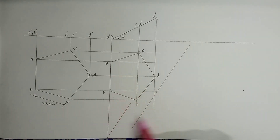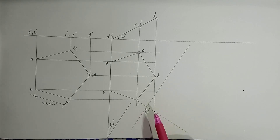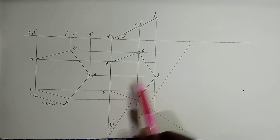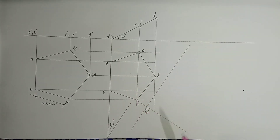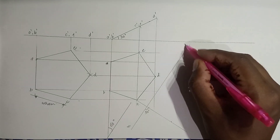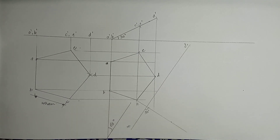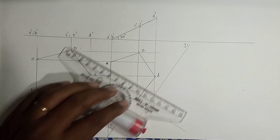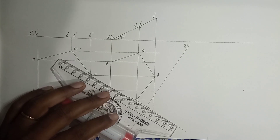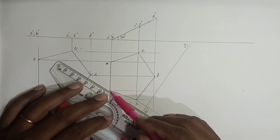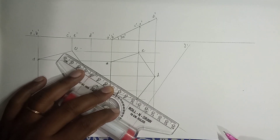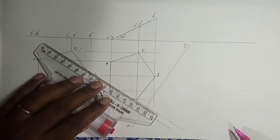Normally in the general three-step problem we make this line at 60 degrees and get the projection. Since this is the auxiliary method, I will have the X1Y1 line over here and transfer all the points with projectors perpendicular to X1Y1. This is very important — all projectors are drawn at 90 degrees to X1Y1.